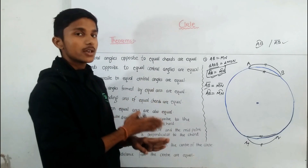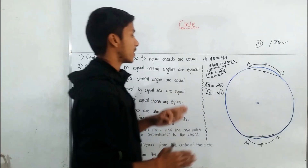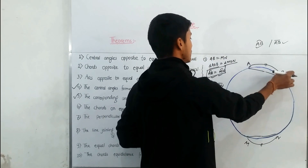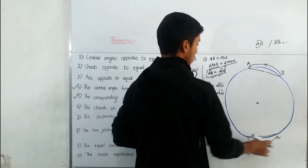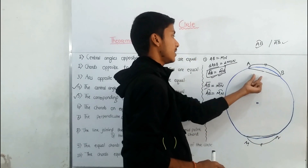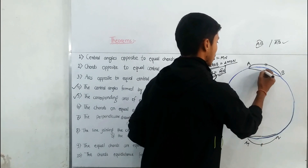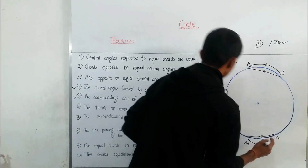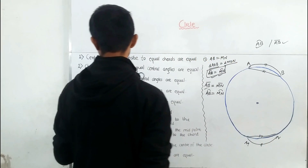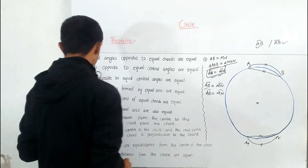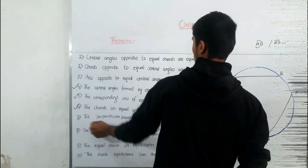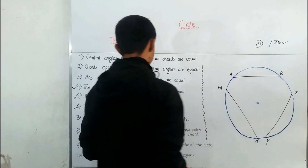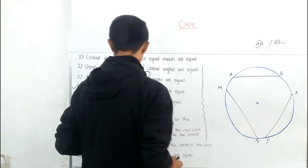Theorem 6 is the reverse of Theorem 5: the chords on equal arcs are also equal. When arc AB is equal to arc MN, then chord AB will be equal to chord MN.